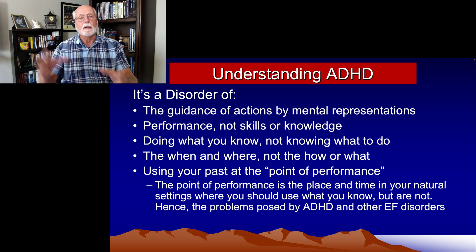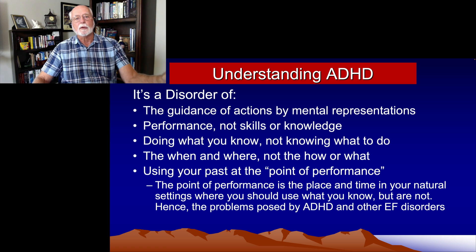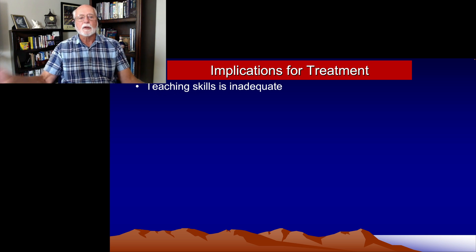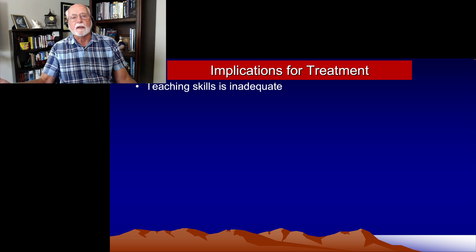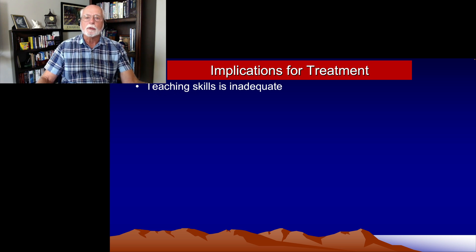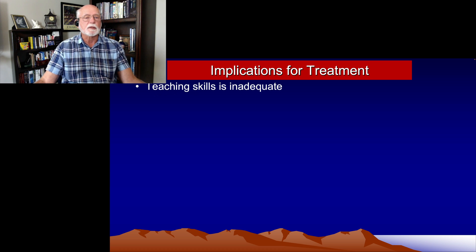The problems ADHD poses because of executive deficits is one of getting things done — doing things as we should given the experience, history, and knowledge we have. The knowledge at the back of the brain is not very consistent in guiding our behavior being created and executed at the front. What does this mean for treatment? It means that teaching skills to someone with ADHD just won't cut it — you're simply conveying more knowledge. Even if you teach it to them, they're not going to use it in their typical lives because ADHD precludes that from happening consistently. You can put kids in social skills camps, teach them self-regulation or time management — that's not going to work because you're just providing more knowledge.